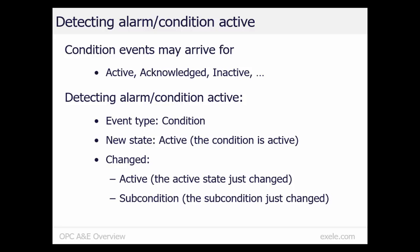Many OPC A&E clients are interested in alarm condition events. Once a subscription and filter have been configured, an OPC A&E client can start receiving events. Even after specifying a subscription filter that only returns alarm condition events, events may arrive due to conditions becoming active, conditions being acknowledged, and conditions becoming inactive. If the user is only interested in events where the condition became active, the client can analyze incoming events to detect alarm condition active events. First, configure the subscription filter to only send condition event types. Next, check if the current state is active by looking at the new state field. Then check the changed field to ensure that both active and subcondition have changed in this event — making sure we have a condition event whose state is currently active, it just became active, and a subcondition just changed.